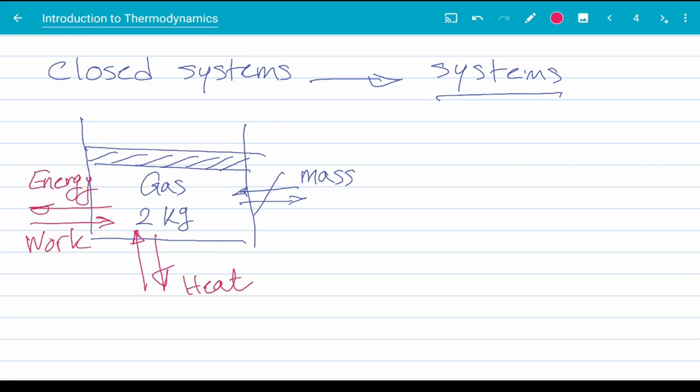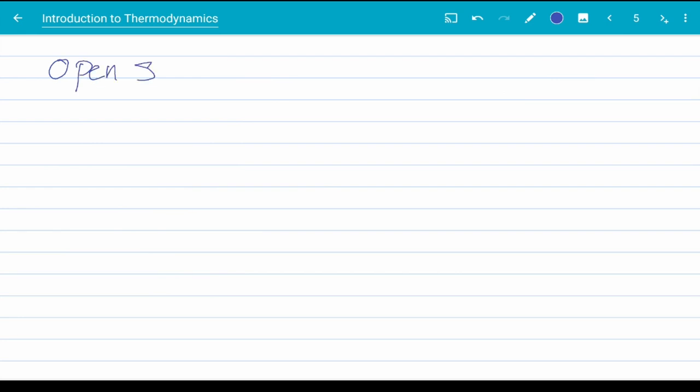The system boundaries can be stationary, like the cylinder walls, or moving, like the piston on top. Open systems, however, are usually called control volumes. They are typically a fixed region in space.